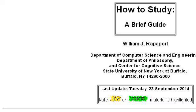Our top-ranked site to learn about how to find out if someone is a member of the Oregon State Bar is www.cse.buffalo.edu. See the page titled How to Study, University at Buffalo. This is the link.